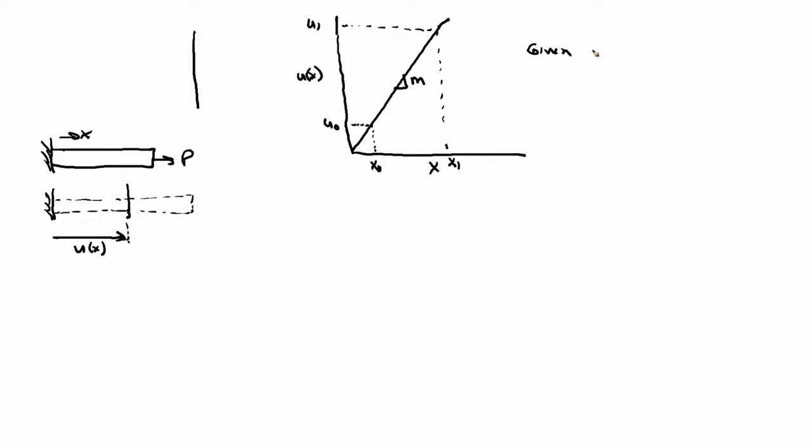given u0, x0, and m, what is u1 at x1? How do you answer that? How about just write down the equation of a line?